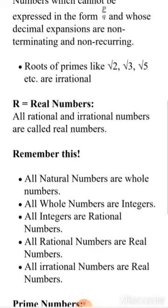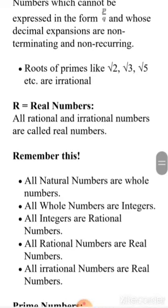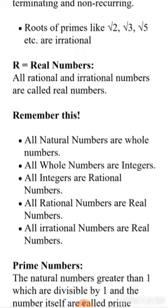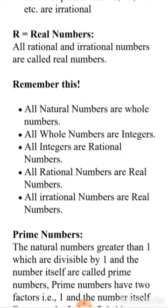Now, Irrational Numbers. The definition of irrational is just the opposite of rational. These are numbers which cannot be written in the form of P upon Q. Talking about decimal expansion, irrational numbers are non-terminating and non-recurring — they neither terminate nor repeat. For example, 0.375893214... and so on. Also, square roots of prime numbers like 2, 3, 5, 7 are irrational. So root 2, root 3, root 7, root 11 — these are all examples of irrational numbers.